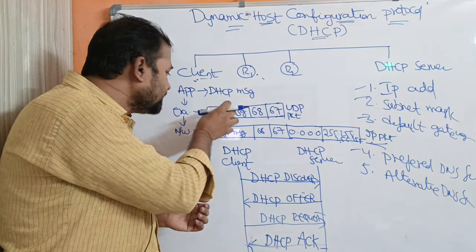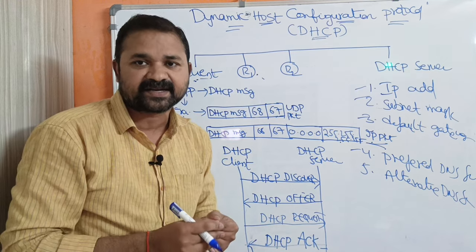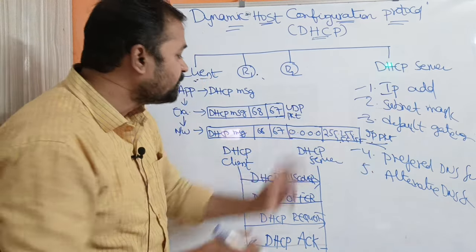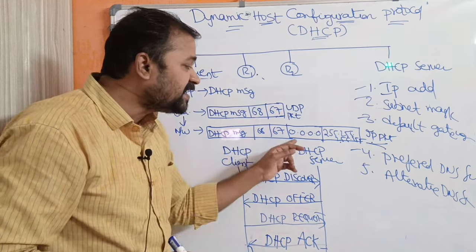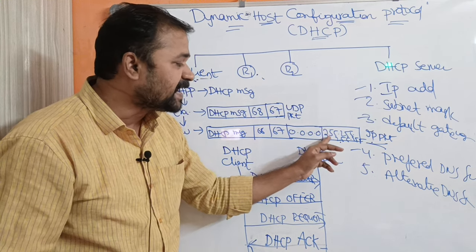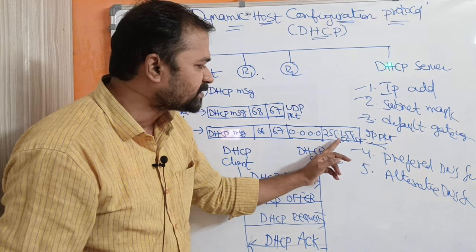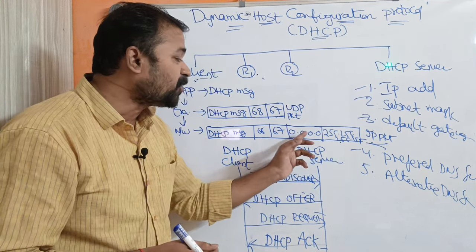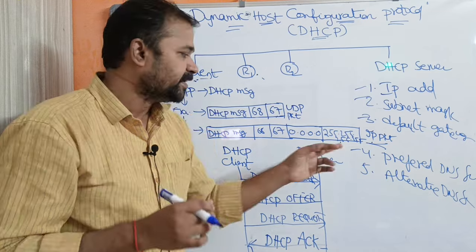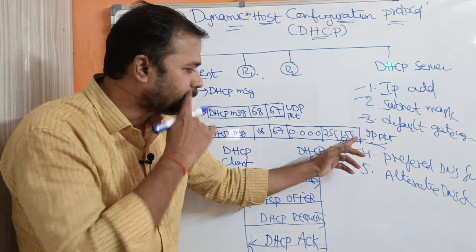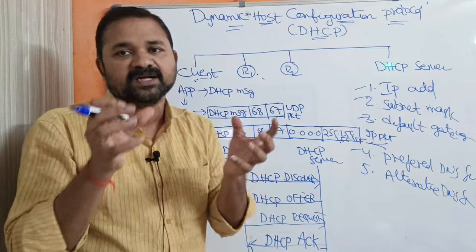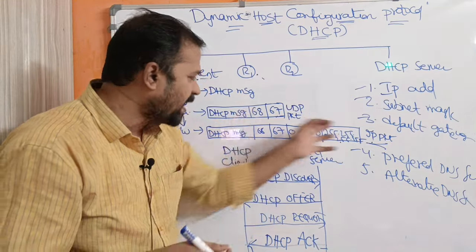The packet is then transmitted to the network layer, where the UDP packet is encapsulated in an IP packet. The IP packet contains two IP addresses: 0.0.0.0 and 255.255.255.255. The address 0.0.0.0 means the client does not know its own IP address and is requesting one. The address 255.255.255.255 is a broadcast address, so the packet is transmitted to all machines on the network.